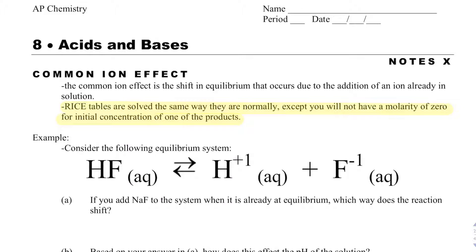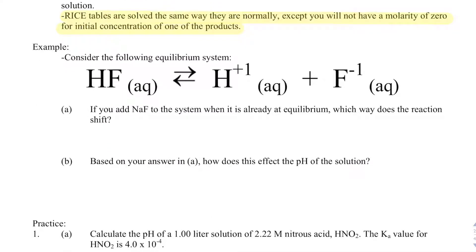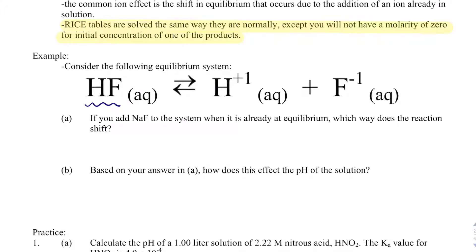We're going to do the math of shifting a reaction using Le Chatelier's principle, but we can predict what will happen. We've got a reaction here where I'm taking HF, and it dissociates into H+ and F-. The question asks, what happens if I add NaF to the system if it's already at equilibrium, and which way does the reaction shift?